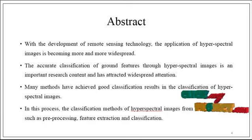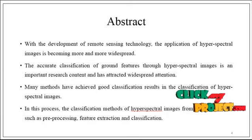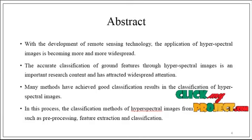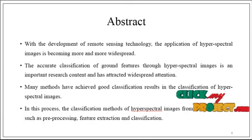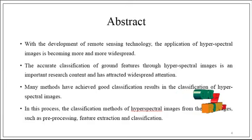In this process, the classification method of hyperspectral images involves three stages. The first one is preprocessing. The second one is feature extraction, and then the classification. By the combination of these three methods, we follow the process to achieve better classification. For each step, we have used different types of algorithms combined together, and this process shows better classification results than other processes.